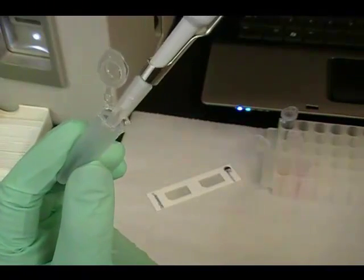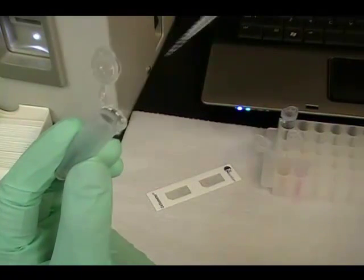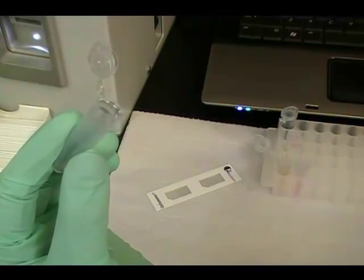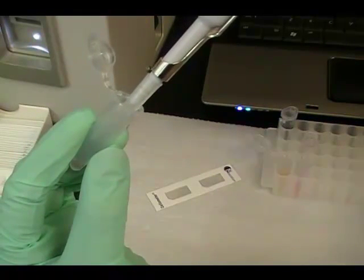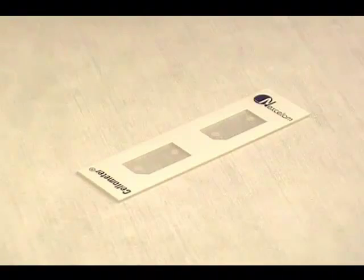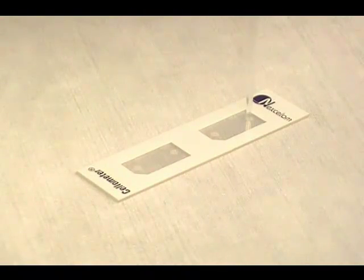For concentration and viability analysis, yeast cells are incubated with a propidium iodide staining solution. 20 microliters of sample is pipetted into a Cellometer counting chamber and allowed to settle for 5 minutes.